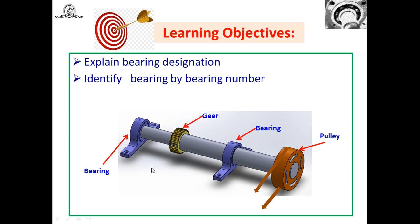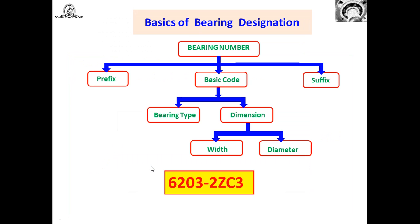When shafts and parts are mounted on shops to give support, rolling contact bearings are used. There are many types of rolling contact bearings — single row deep groove ball bearing, taper roller bearing, cylindrical roller bearing, and conical roller bearing. In today's session, we are going to see how to identify the bearing by bearing number.